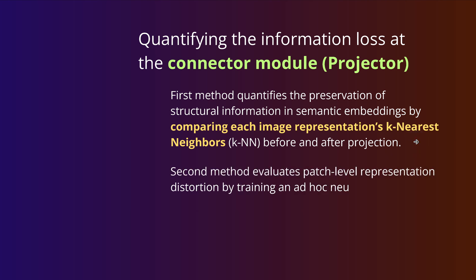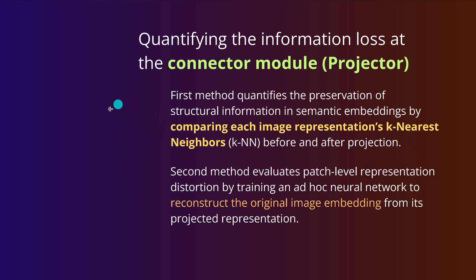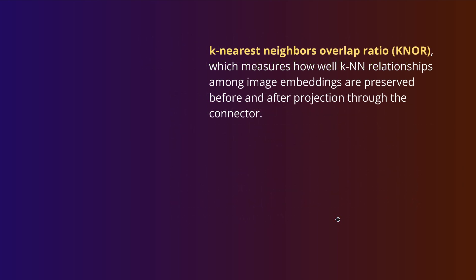Immediately you see the differences — this captures the structural deformation of the mathematical space. But what about the fine-grained detail, like identifying a single number in an image? For that you need to go much more in detail, so they reconstruct the original image from the projected representation — similar to what you know from diffusion — and see how good that reconstruction is. The k nearest neighbor overlap ratio, called Knorr, is the particular indicator for the structural information loss.